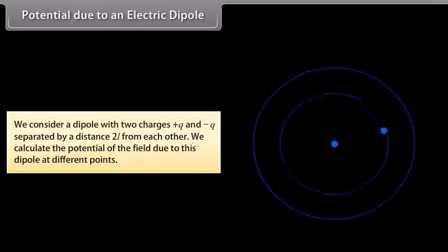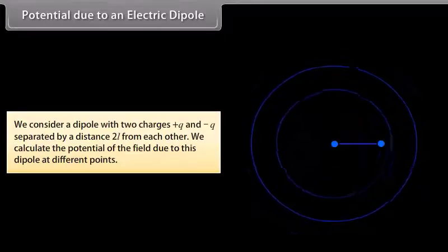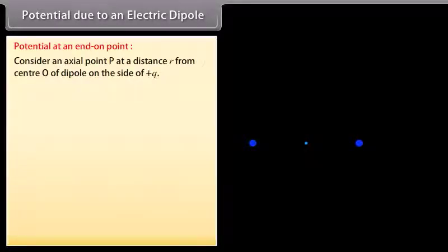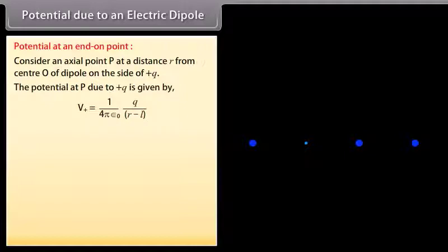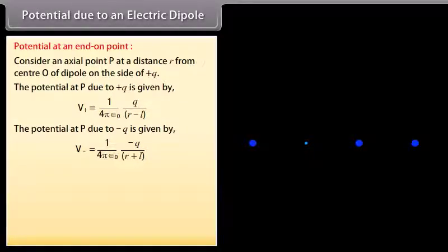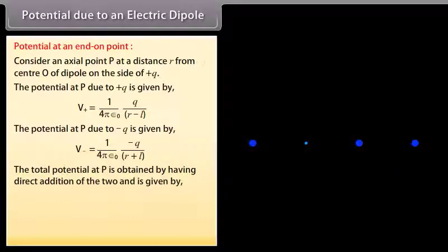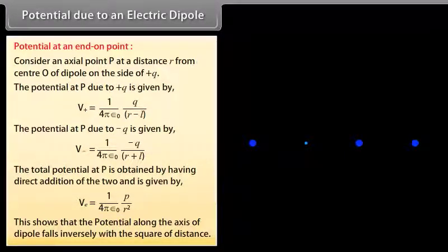Potential due to an electric dipole. Consider a dipole with charges +Q and −Q separated by a distance 2L. For an axial point P at distance R from center O on the side of +Q: the potential due to +Q is V₊ = (1/4πε₀) × Q/(R−L), and due to −Q is V₋ = (1/4πε₀) × (−Q)/(R+L). The total potential at P is V_E = (1/4πε₀) × P/R², showing that the potential along the axis of the dipole falls inversely with the square of distance.